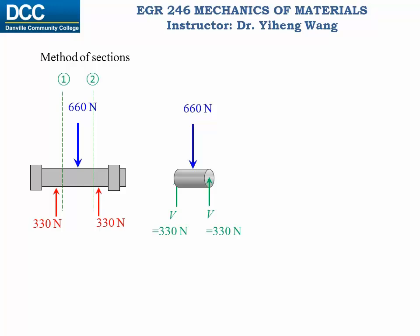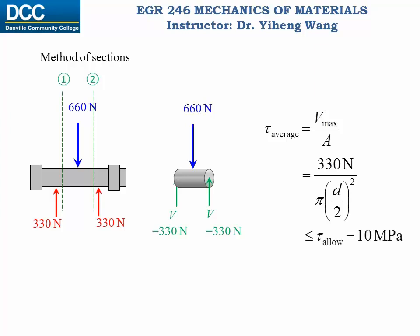Therefore, the average shear stress in the pin is V_max over the cross-sectional area, where the area is pi times (d/2) squared. This must not exceed the allowable shear stress of 10 MPa. Solving this, the diameter of the pin must be no less than 6.48 mm — that is the minimum required diameter and the answer to this problem.